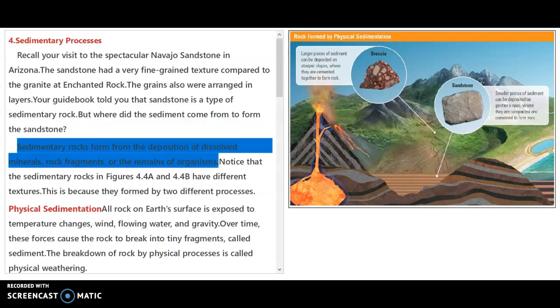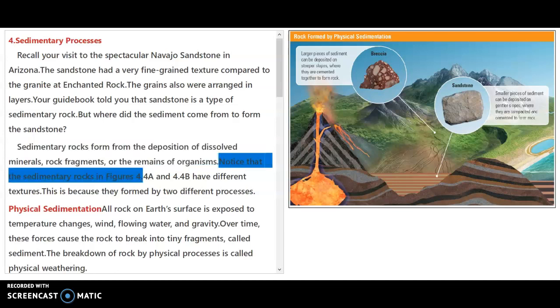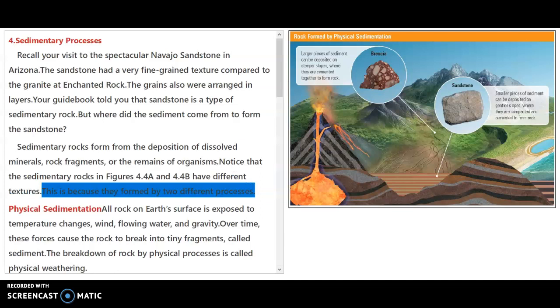Sedimentary rocks formed from the deposition of dissolved minerals, rock fragments, or the remains of organisms. Notice that the sedimentary rock in figures 4a and 4b have different textures. This is because they formed by two different processes.